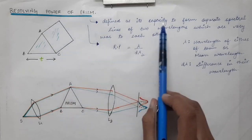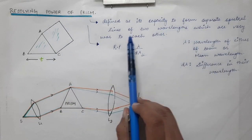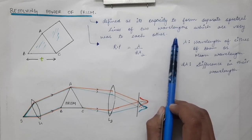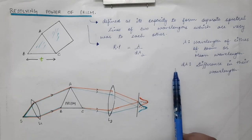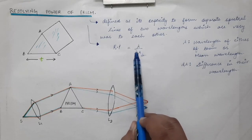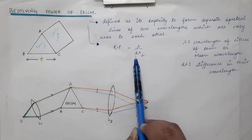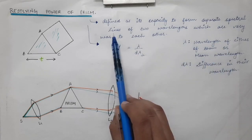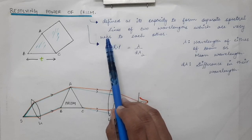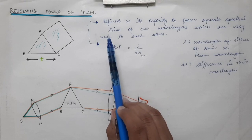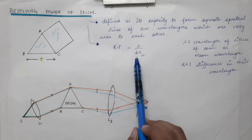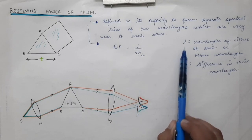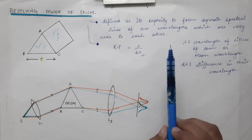The resolving power is the capacity to form separate spectral lines of two wavelengths that are very near to each other. One wavelength is lambda and another is lambda plus d_lambda, where d_lambda is the minimum difference in wavelengths such that the principal maxima of one spectral line falls on the first minima of the other — this is the Rayleigh criterion.